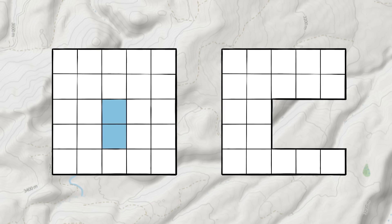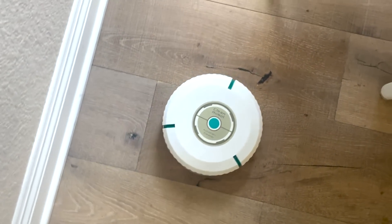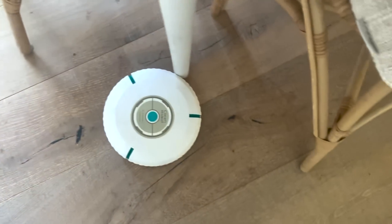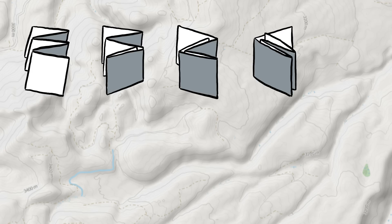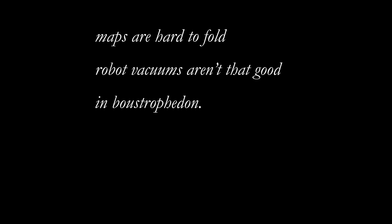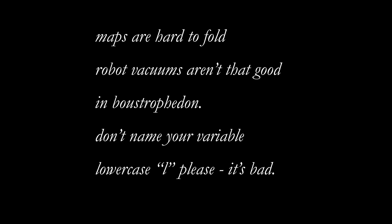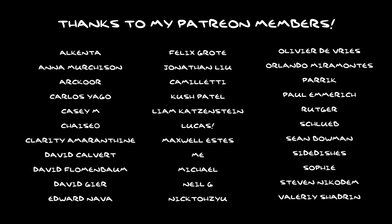The paper that introduced the idea of using folds for coverage path planning was published in 2021, and I don't have any insider knowledge on what algorithms are most popular in the cleaning robot industry. If you have a Roomba, watch its path and let me know if it looks like a folded piece of paper. I hope this video got you thinking about folding things. There are a lot of unexplored problems in map folding math, and if anyone is going to solve them, it's probably the kind of person that would watch this video — that's you. So remember: maps are hard to fold, robot vacuums aren't that good in booster feed-on, and don't name your variable lowercase l. Please. It's bad.